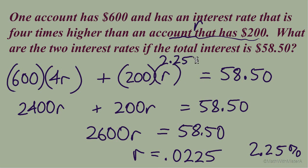So let's still figure out what's the interest rate for the account that has $600. It's 4r, so 4 times 2.25% equals 9%.